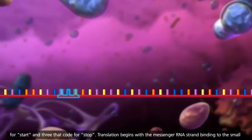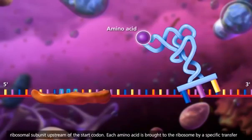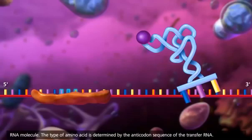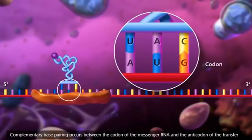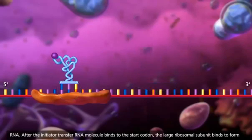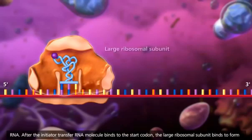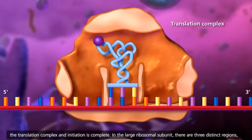Translation begins with the messenger RNA strand binding to the small ribosomal subunit upstream of the start codon. Each amino acid is brought to the ribosome by a specific transfer RNA molecule. The type of amino acid is determined by the anticodon sequence of the transfer RNA. Complementary base pairing occurs between the codon of the messenger RNA and the anticodon of the transfer RNA. After the initiator transfer RNA molecule binds to the start codon, the large ribosomal subunit binds to form the translation complex and initiation is complete.